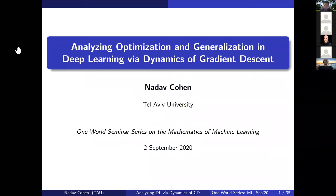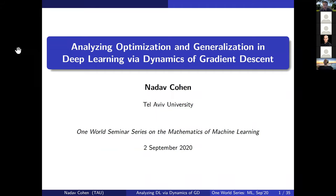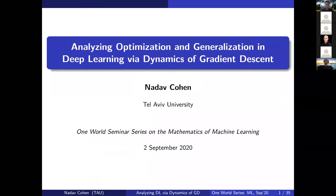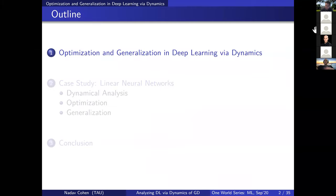Thanks a lot Simon and organizers for inviting me. It's a great pleasure to be here. We can either unmute or put questions in the chat box. So what I will talk about today is analysis of optimization and generalization in deep learning through the dynamics of gradient descent. I will start by setting the stage and laying out the claim I will try to make today, and then the rest of the talk will be around trying to justify that argument.